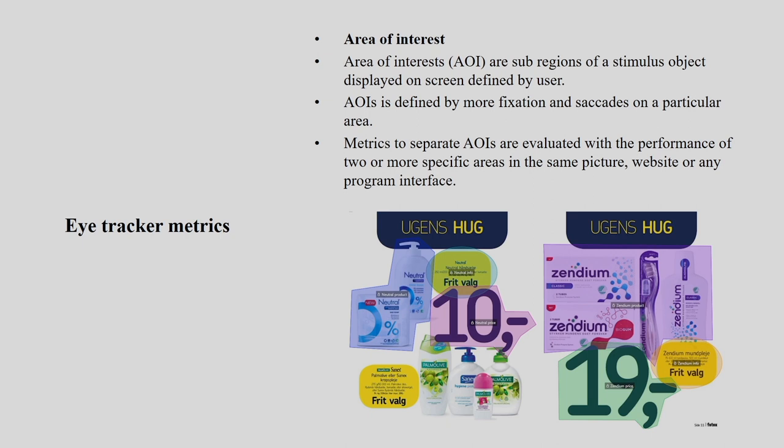Area of interest — we already discussed this briefly. Areas of interest are sub-regions of the stimulus object displayed on screen, defined by the user. They are defined by more fixations and saccades on a particular area. Metrics to separate areas of interest are evaluated by comparing the performance of two or more specific areas in the same picture, website, or program interface. Using area of interest, we redesign things properly.